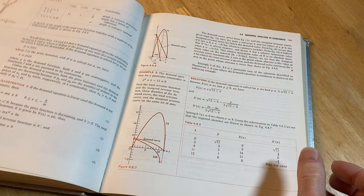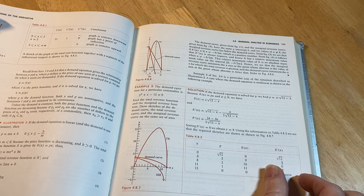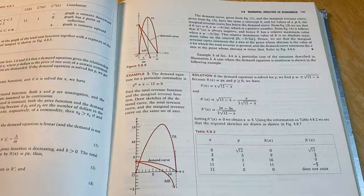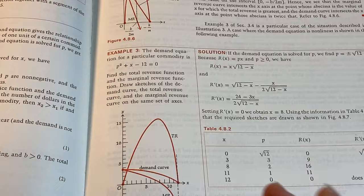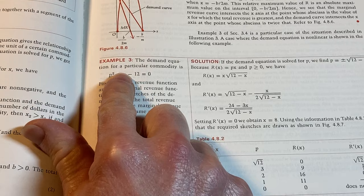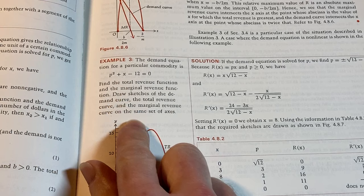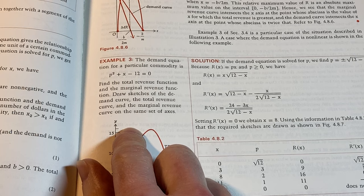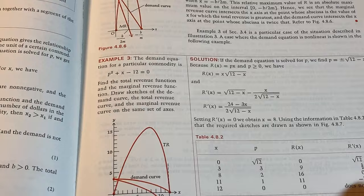Marginal analysis and economics. Oh, interesting. Let's look at this here. So this is something that you won't find in other calculus books unless it's possibly a business calculus book, which is what this is, right? This is essentially a business calculus book. The demand equation for a particular commodity is given by p squared plus x minus 12 equals zero. Find the total revenue function and the marginal revenue function. Draw sketches of the demand curve, the total revenue curve, and the marginal revenue curve on the same set of axes. Hardcore.